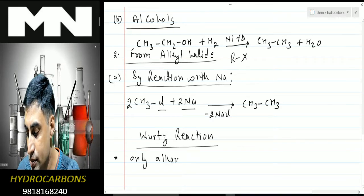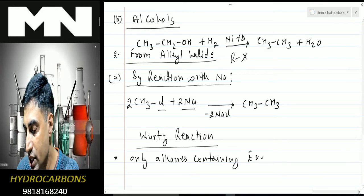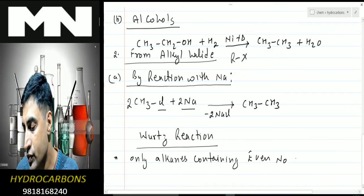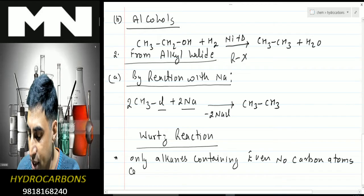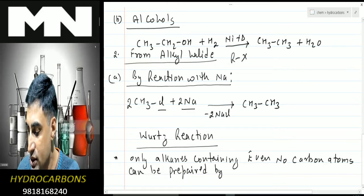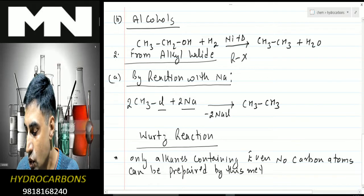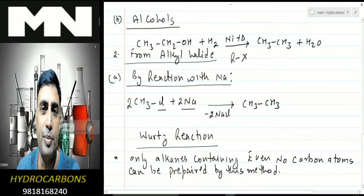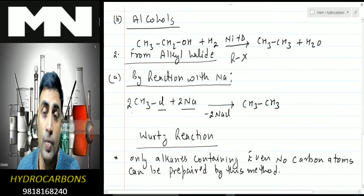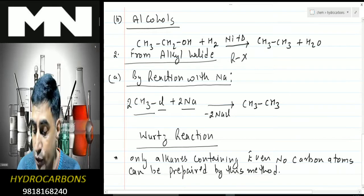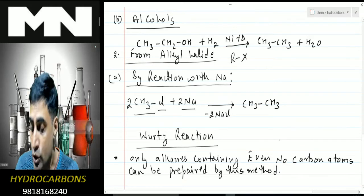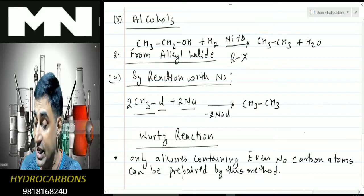The limitation of the Wurtz reaction is that only alkanes containing an even number of carbon atoms can be prepared by this method. This is because we are multiplying by 2: methyl chloride gives ethane, ethyl chloride gives butane, propyl chloride gives hexane — you always end up with an alkane having an even number of carbon atoms.